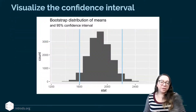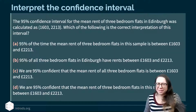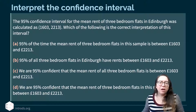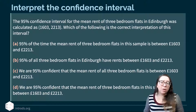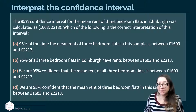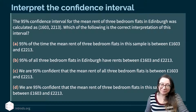Here is what those lines look like in the visualization. Now let's think about interpretation. The 95% confidence interval for the mean rent of three bedroom flats in Edinburgh was calculated as 1,603 to 2,213. Which of the following is the correct interpretation of this interval? I'll give you a second to take a look at them.